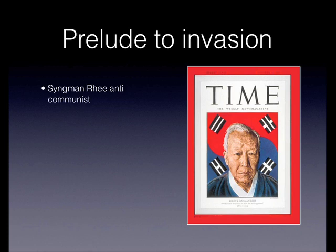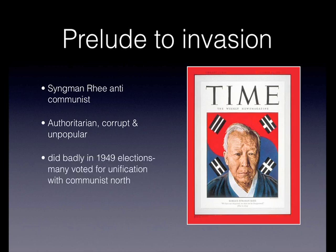Syngman Rhee was very anti-communist and in that respect he was popular with the US. But his government was very authoritarian, corrupt, and not particularly popular with a major segment of the South Korean population. They did badly in the 1949 elections and many South Koreans actually voted for unification with the communist North. Back in 1949, before the South Korean economic miracle which doesn't really gather steam until the 1960s, both the North and the South were mired in poverty and really rather undeveloped.